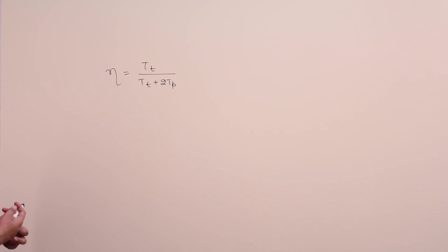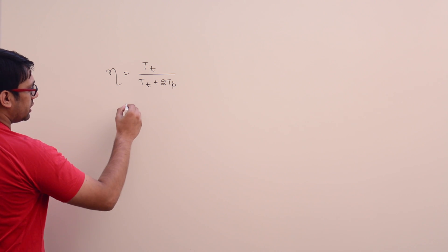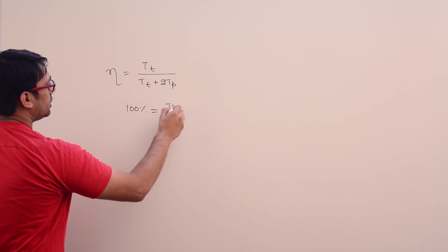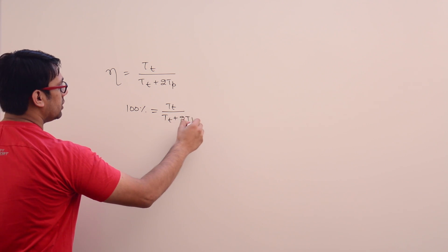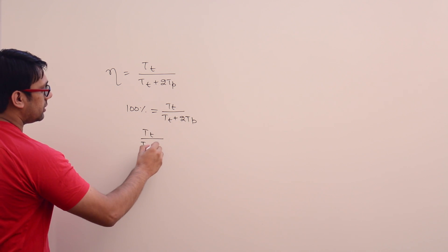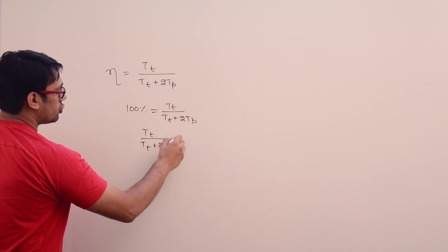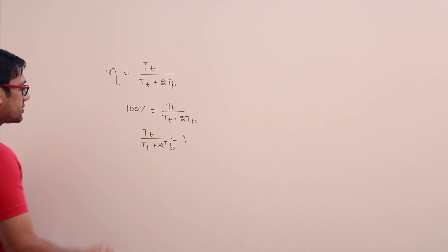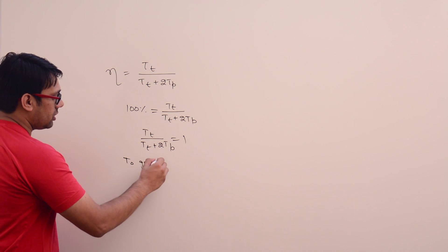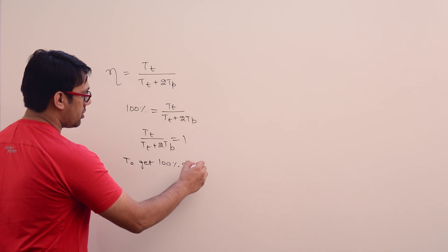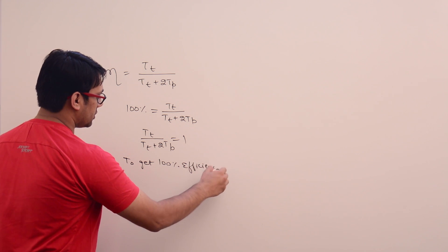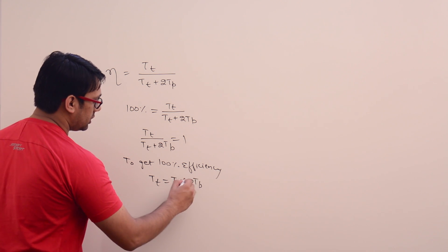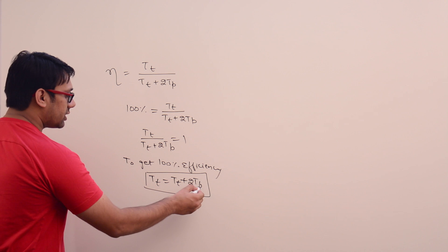If we analyze this efficiency expression, we can clearly see that to get 100% efficiency, TT upon TT plus 2 into TP should be equal to 1. This means TT must equal TT plus 2 into TP.